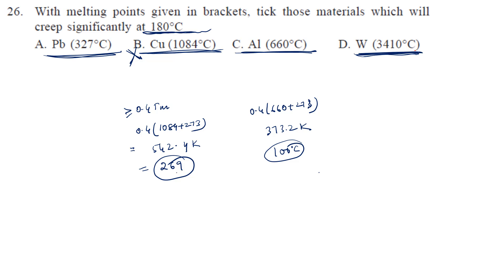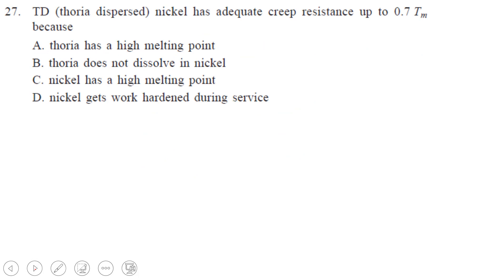A and C, where creep can happen. Next, thoria-dispersed nickel has adequate creep resistance up to 0.7 times the melting point. Thoria, that is ThO2, this is oxide. It has a higher melting point, and because it does not dissolve in the material.